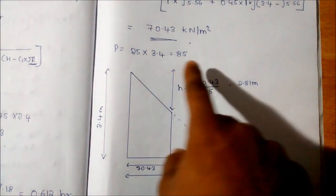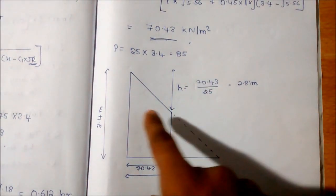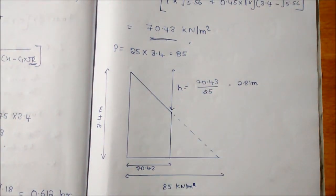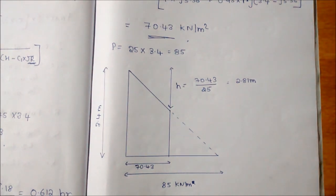To determine this height, we divide the P max by density, so we will get 2.81.